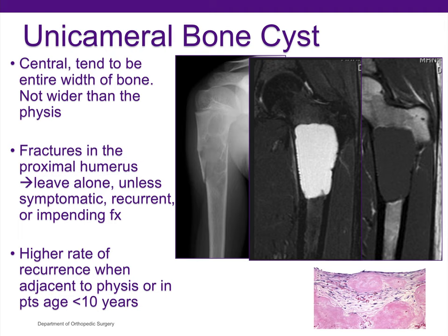Unicameral bone cyst tends to be central and to occupy the entire width of the bone. It does not develop any more widening than the actual width of the physis — an important differentiation from aneurysmal bone cyst. Fractures could develop, and in fractures of the proximal humerus those can be left alone. However, in the lower extremities, such as the proximal femur, impending fractures or pathologic fractures need to be treated surgically in order to allow for weight-bearing.